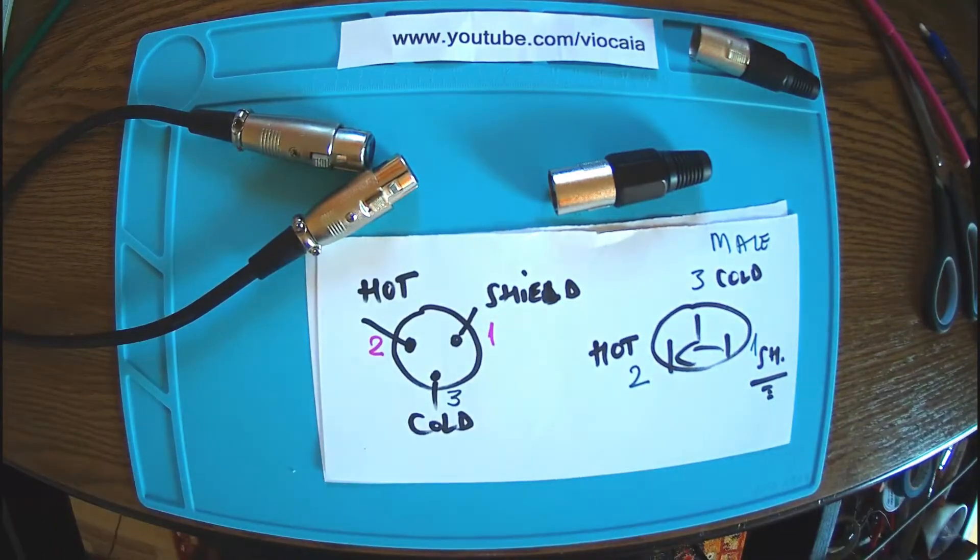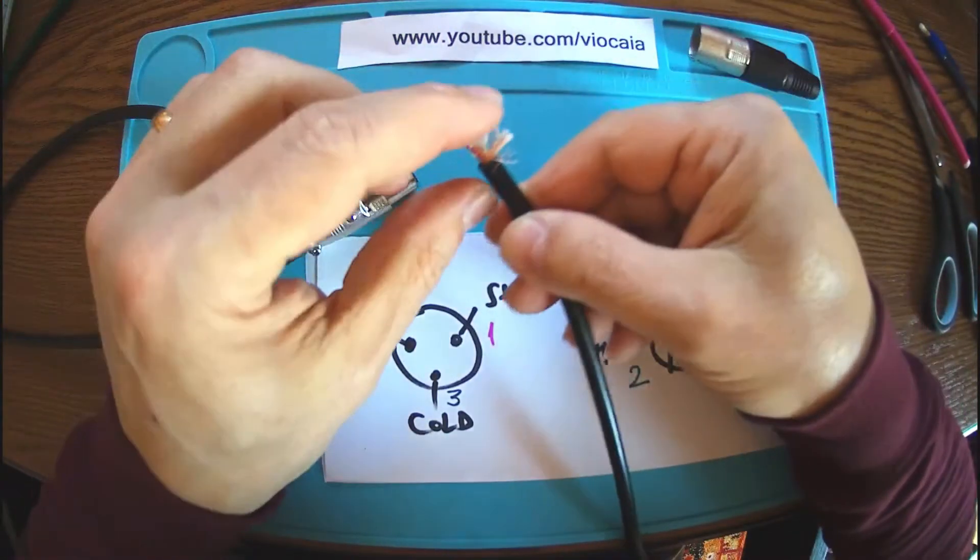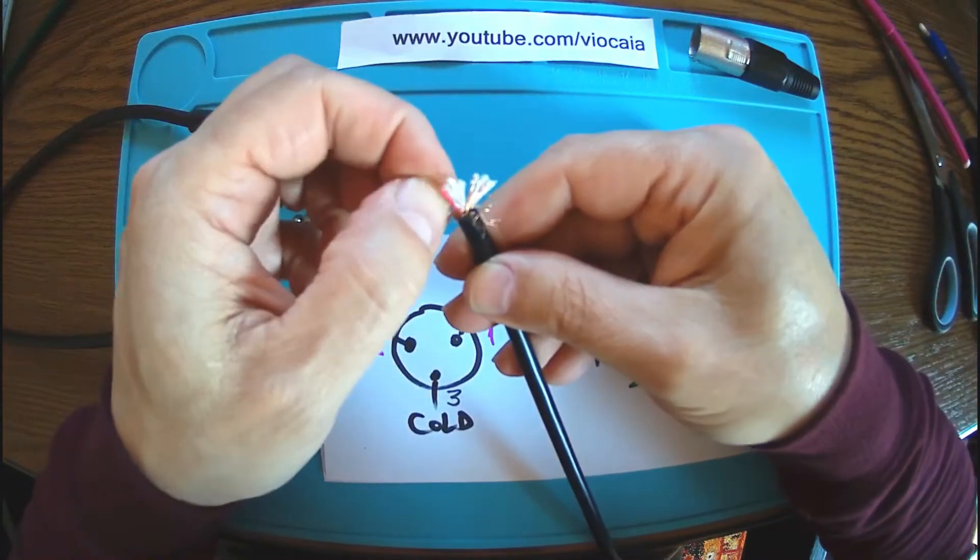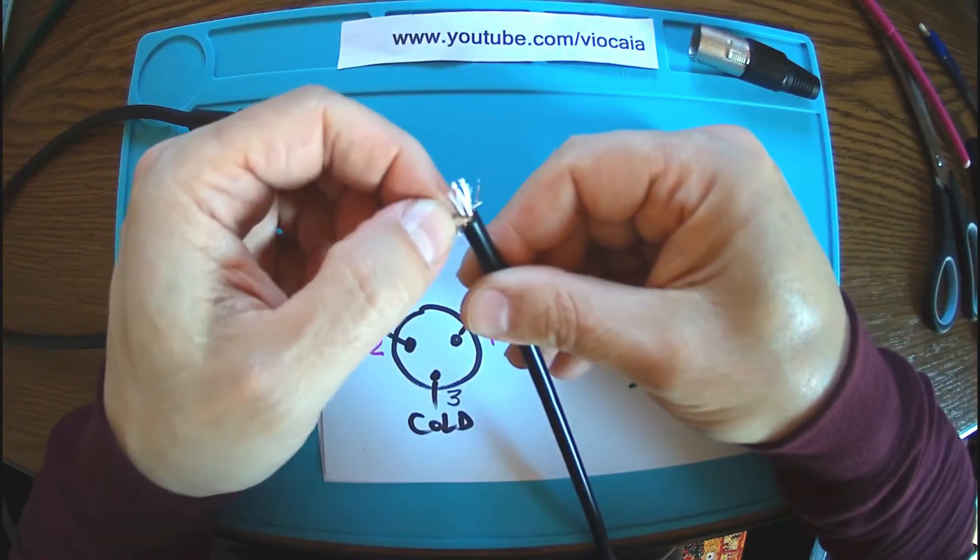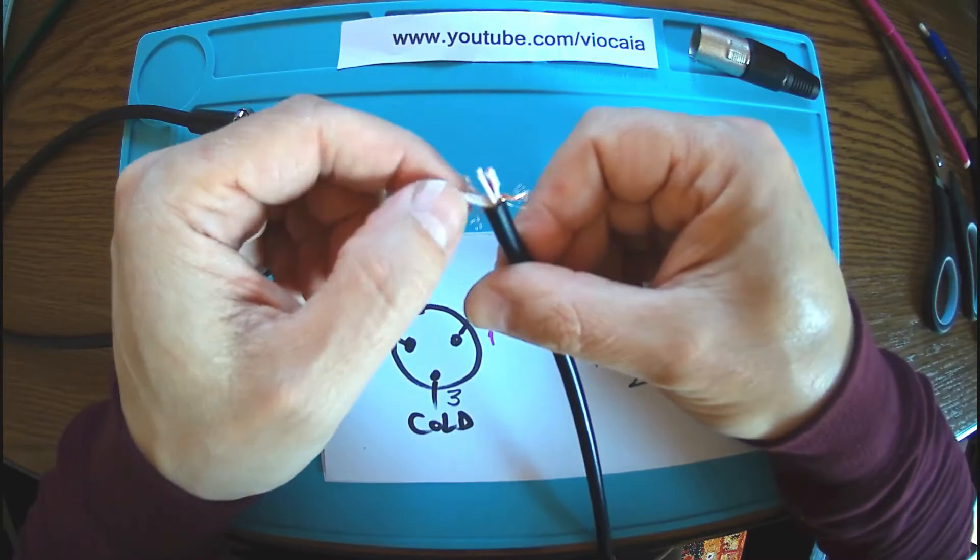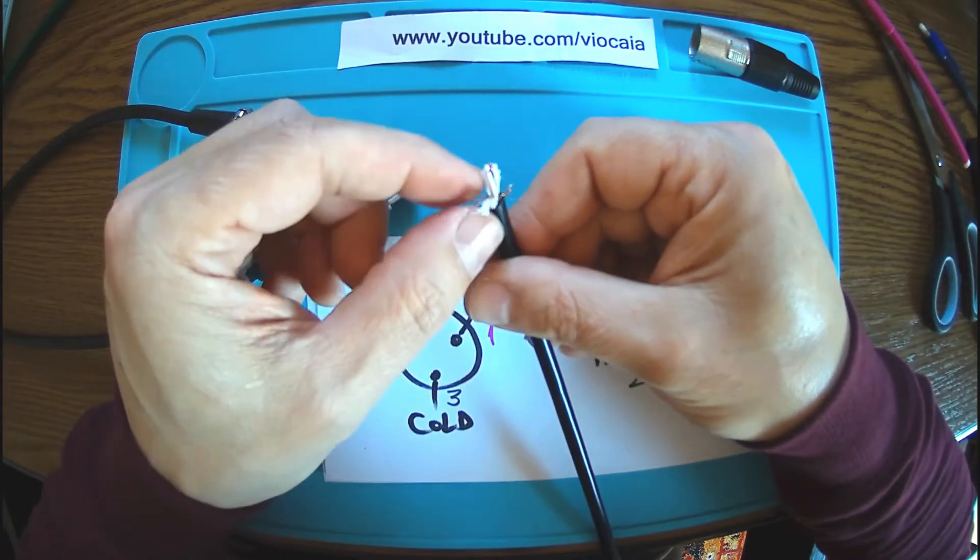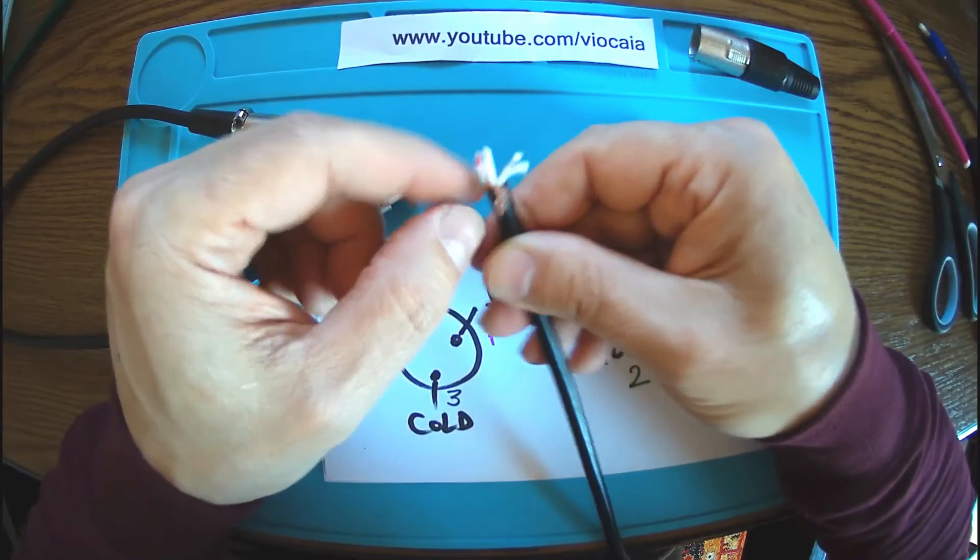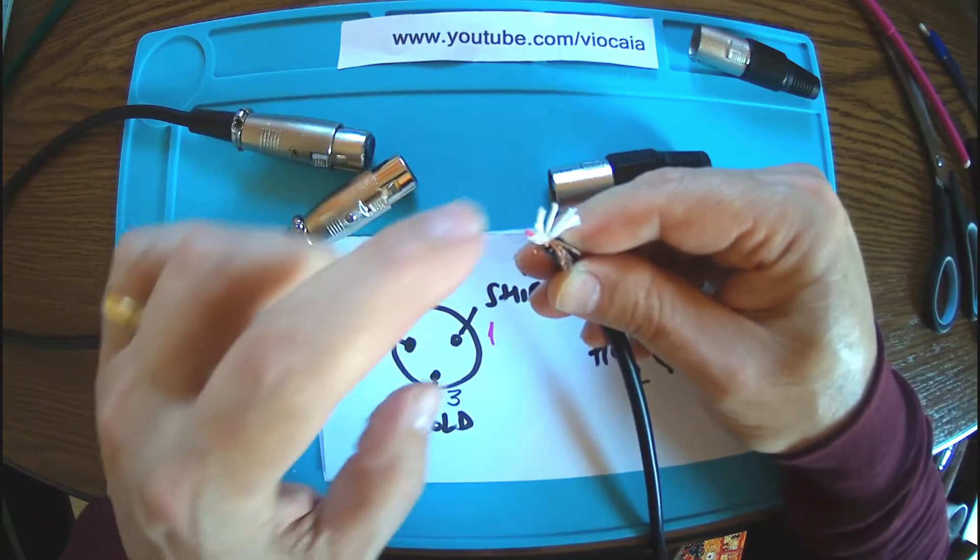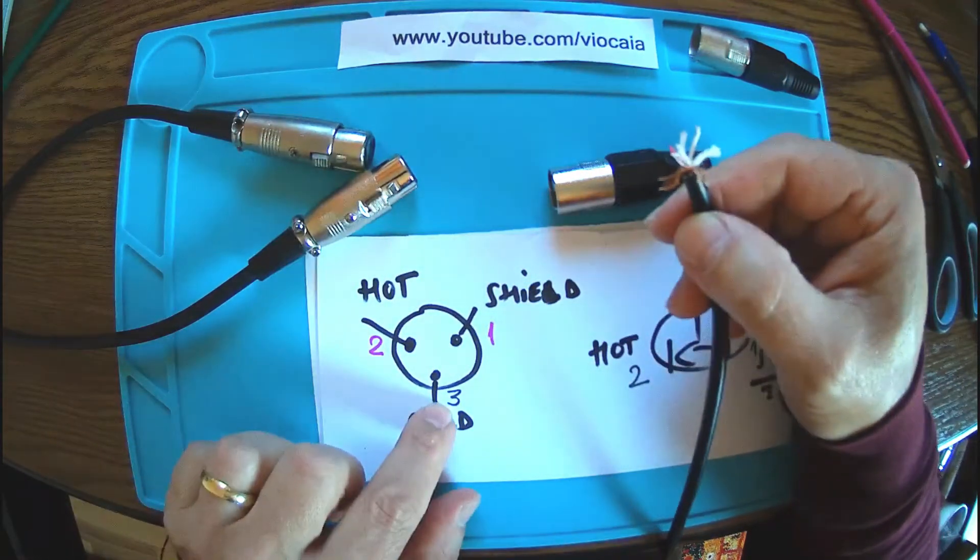This is the metal shielding and the unisolated wires inside. This will be the shield, and then we're gonna use white for cold or number three, and then red on number two for the hot one.